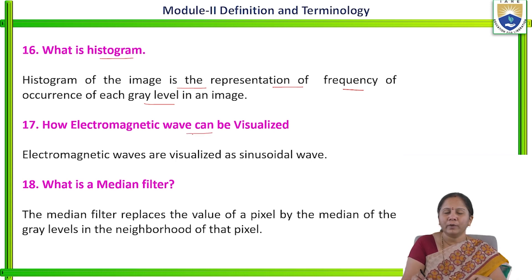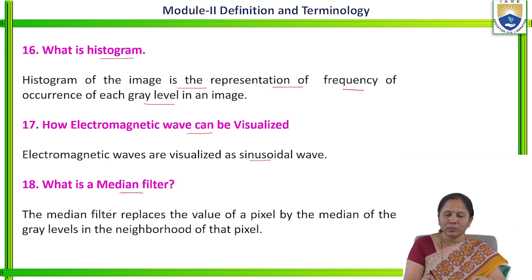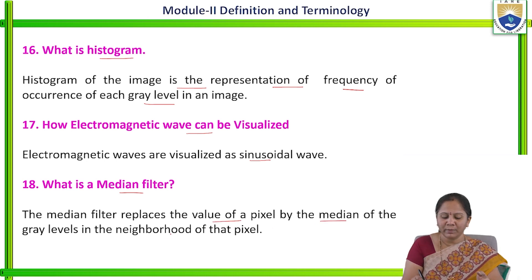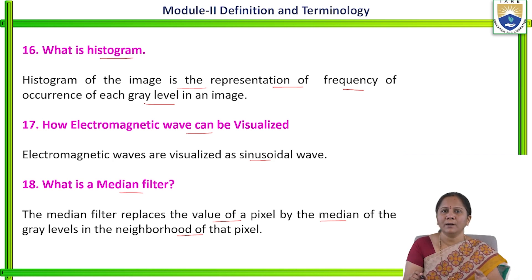How can electromagnetic waves be visualized? Electromagnetic waves are visualized in the form of sinusoidal waves. What is a median filter? It comes under non-linear filters. The median filter replaces the value of a pixel by the median of the gray levels in the neighborhood of that pixel. Considering all the pixels under the mask, we arrange them in ascending order, identify the middle pixel value, and that value is replaced as the center pixel.